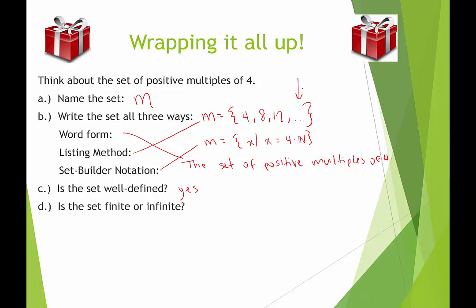Is the set finite or infinite? Well, you can see here I put that triple dot, indicating that it's going to keep going on and on. There is no largest multiple of 4. So this is an infinite set. Therefore, it does not have cardinality.